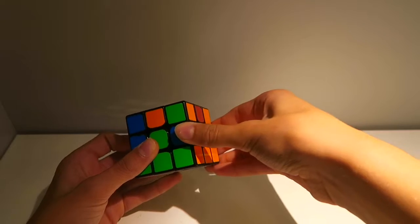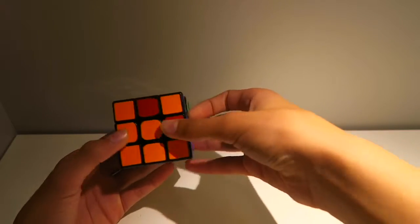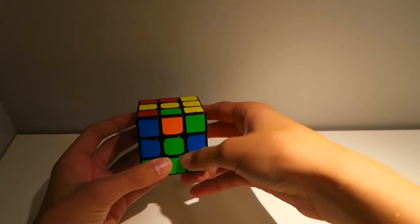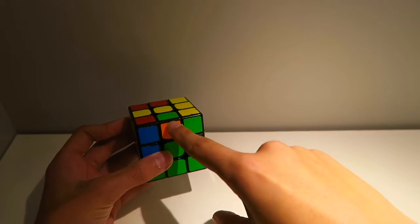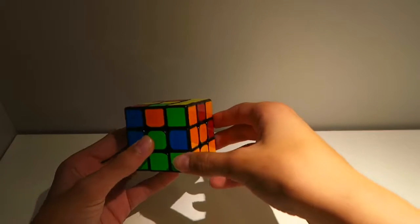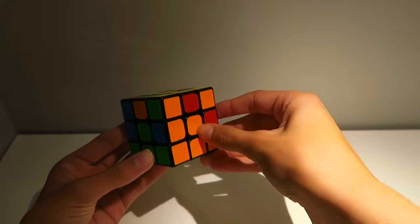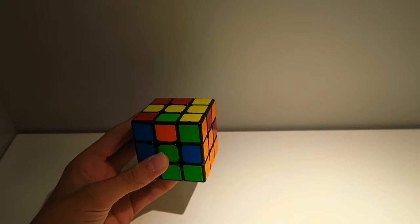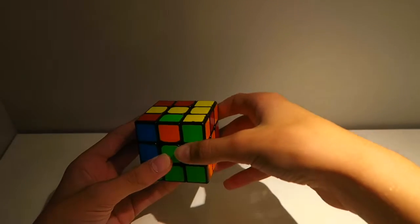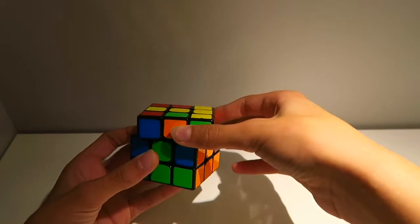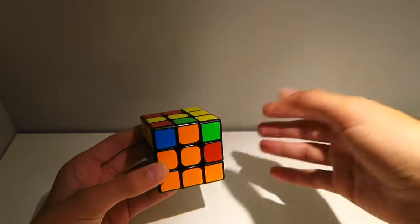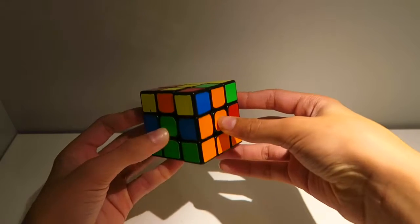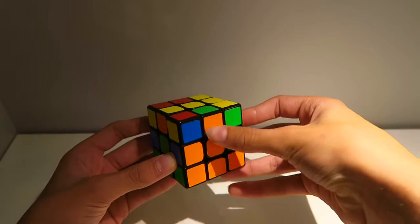To solve the second layer, we need to find four different edges and put them into their slots. Let's look for an edge that goes in the middle layer. Here we have an orange and green edge, and this is the orange-green slot right here. We need to put the front sticker and match it up with its center, like we did with the cross. Here's the edge, the two centers, the slot, and the sticker lining up with its center.